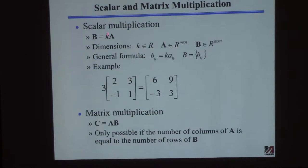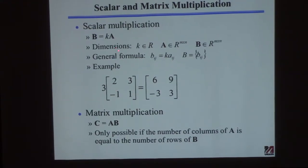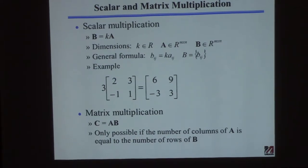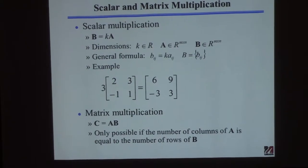Now let's define this operation not by an example, but for any matrix A and any scalar K. So first I'll tell you the dimensions. K is an element of R — it means K is a real number. That notation is a lot easier than writing 'K is a real number.' And A is a matrix of real numbers with M rows and N columns — again, it's shorthand notation.